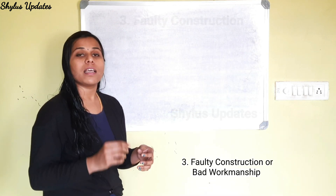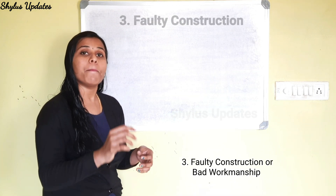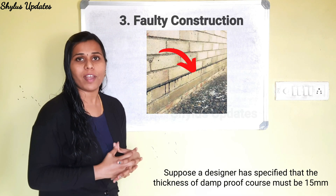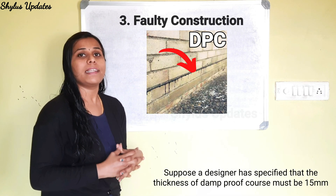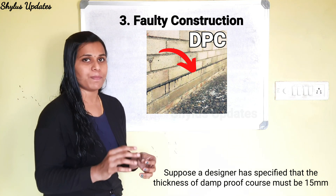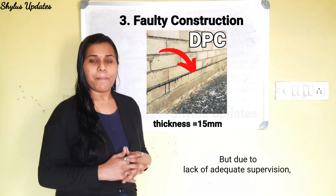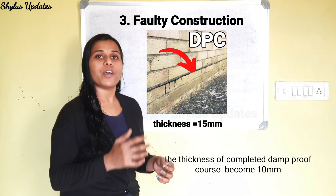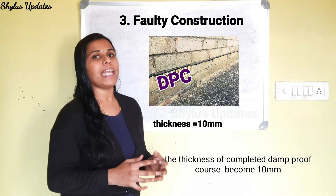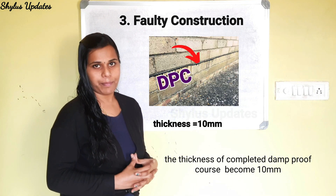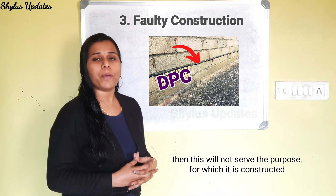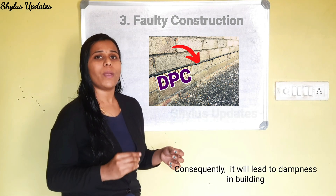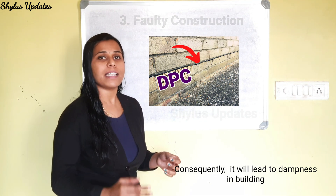Third cause is faulty construction or bad workmanship. For example, a designer may specify that the thickness of damp proof course must be 15 mm, but due to lack of adequate supervision, the completed damp proof course becomes only 10 mm. This will not serve the purpose for which it is constructed and will consequently lead to dampness in the building.